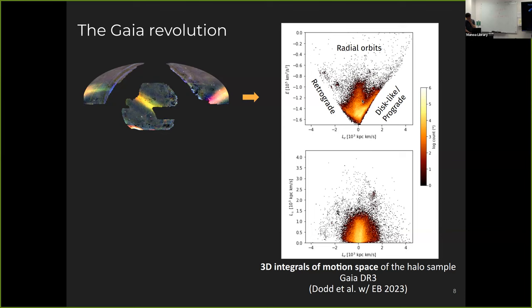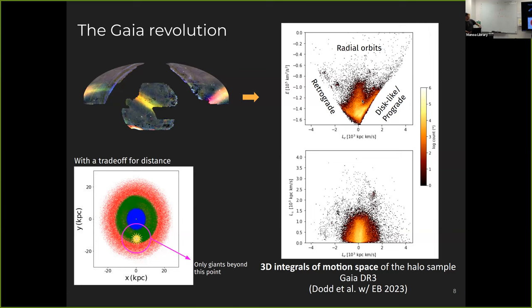Cool. So now with this data, there comes we have to pay the price that we cannot look everywhere. So not for all stars that we see on the top left plots, we can produce this integral of motion, meaning that the Gaia sample is limited in distance. And here's just a schematic view of where the sun would be in the simulation. And the red circle shows where we have access to the data to produce this.